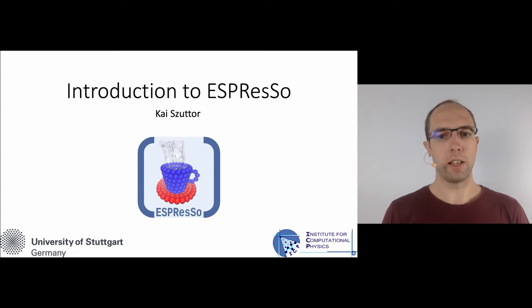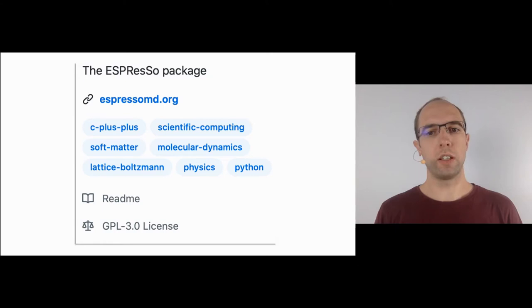But let's first start with the basics about ESPResSo. To introduce ESPResSo to you, I am showing the GitHub profile which shows the most important keywords associated with it. First of all, ESPResSo is an open source software project published under the GPL3 license, which basically means you can run, study, share and modify the software as you like.